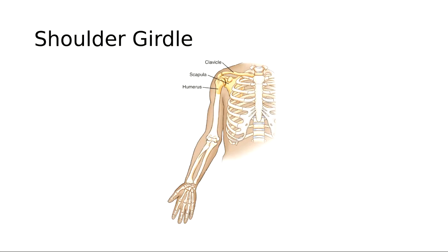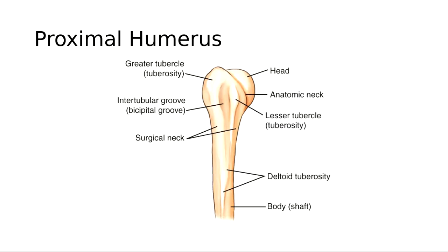When we look at the proximal humerus, there are many parts to it. Anatomy is vital to know — not only to know your anatomy, but to be able to apply it radiographically, look at parts on a radiograph, know what position your patient is in, and what anatomy is being demonstrated and whether it's properly demonstrated.